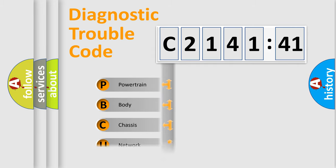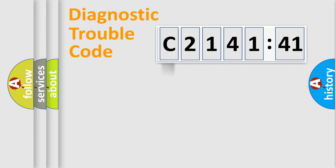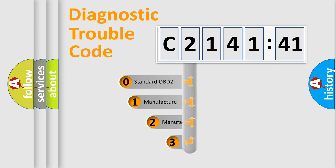We divide the electric system of automobile into four basic units: Powertrain, Body, Chassis, and Network.